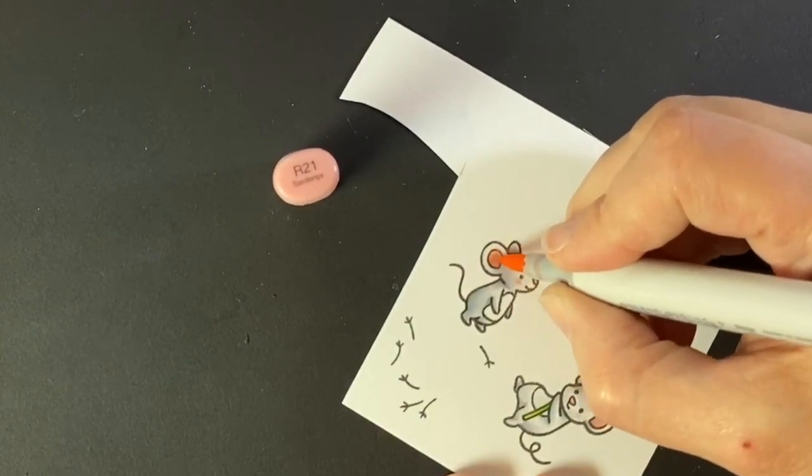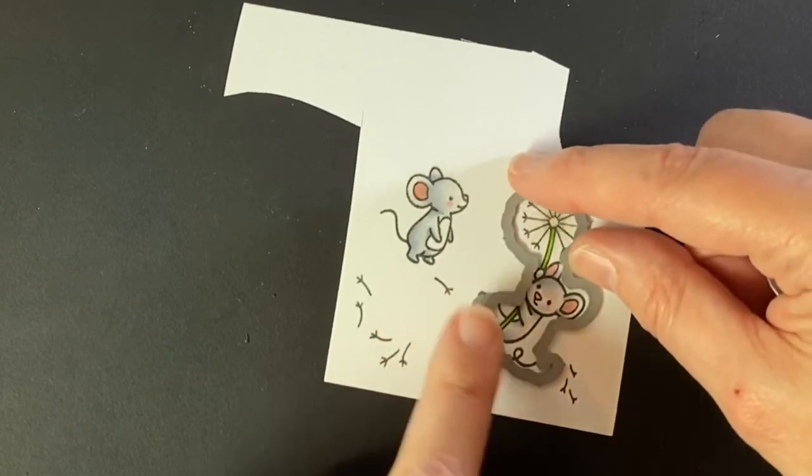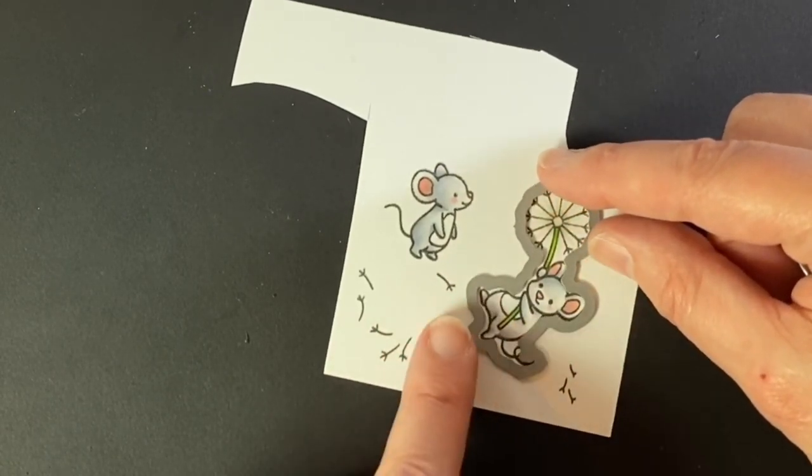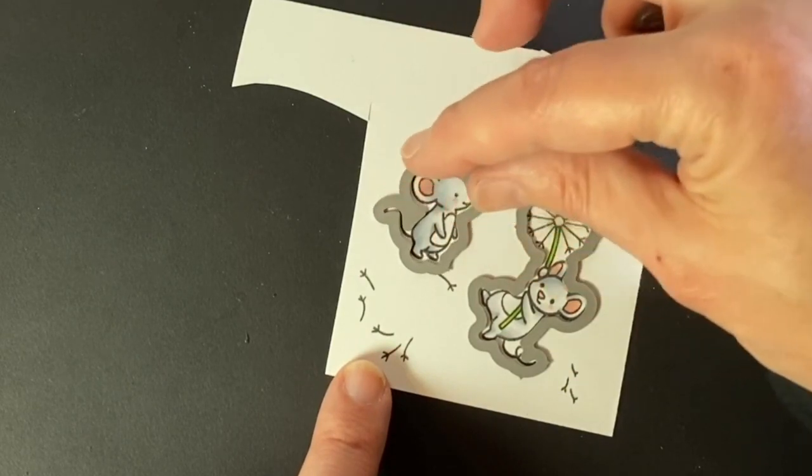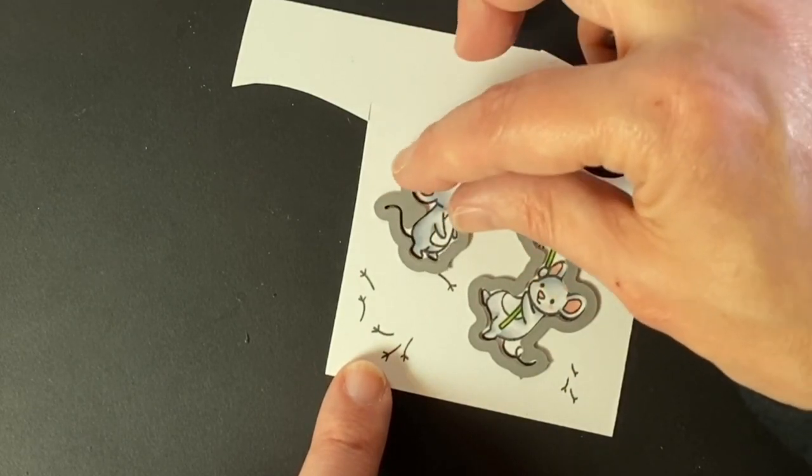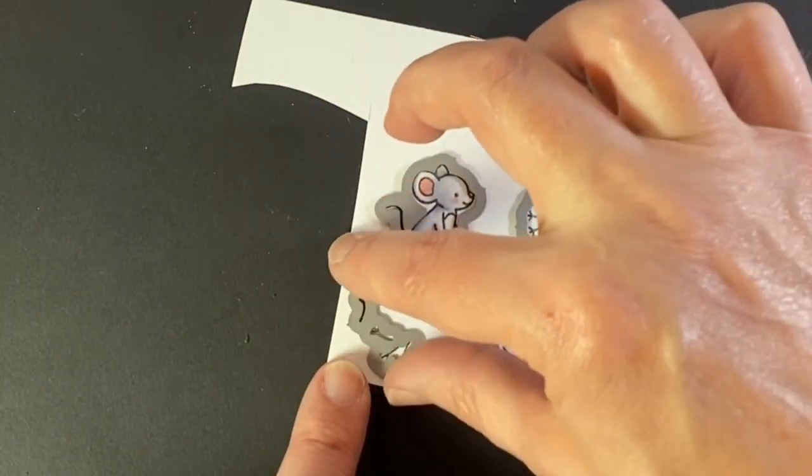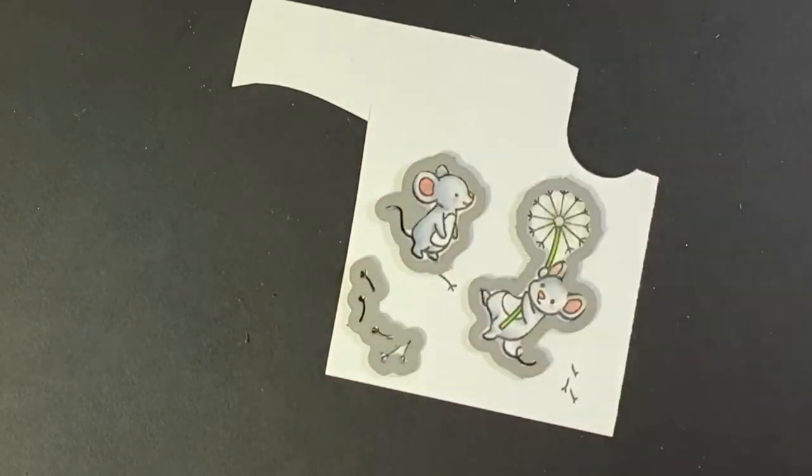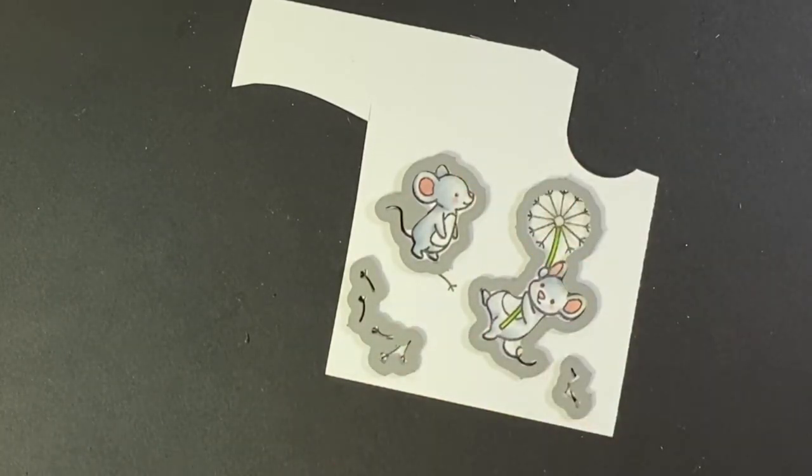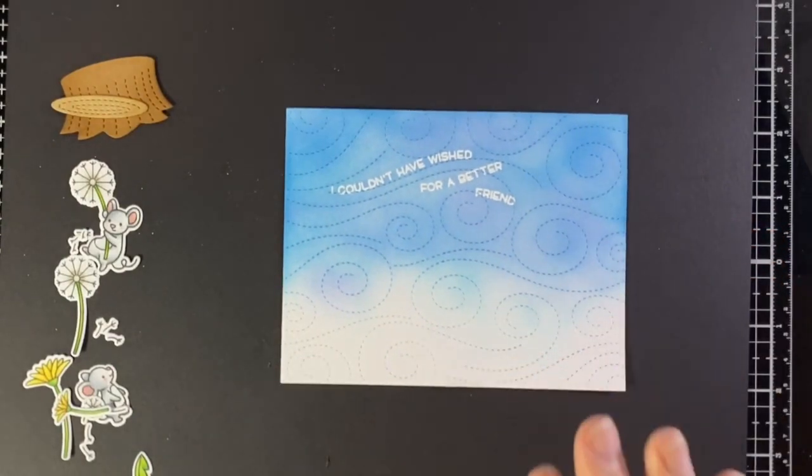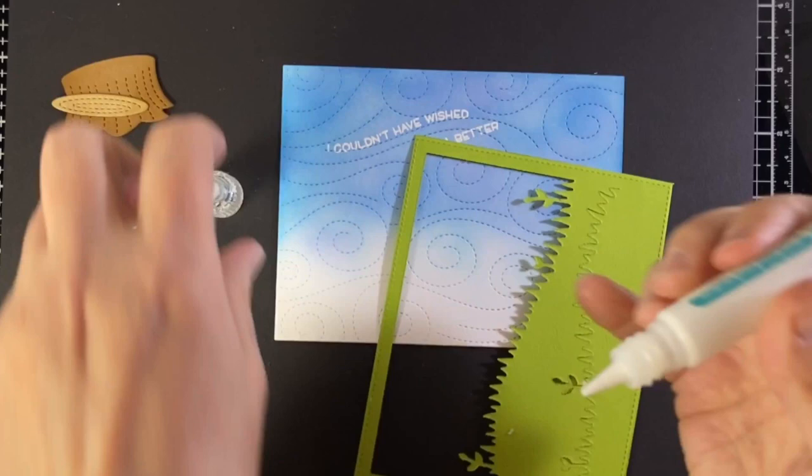It's time to cut these out so I'm using the coordinating dies. I wanted to show you they're very intricate and I just love that because it cuts them very close. With this dandelion fluff it cuts it into separate pieces as well.